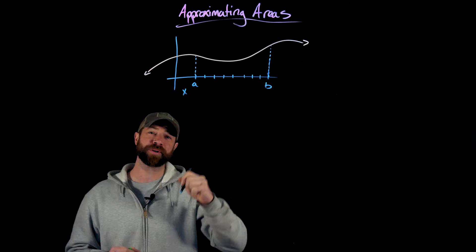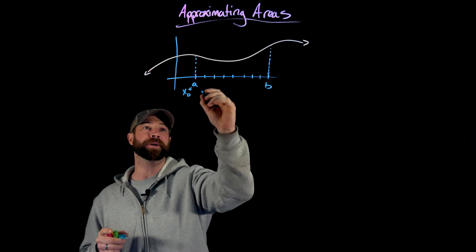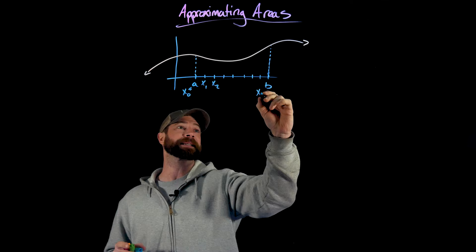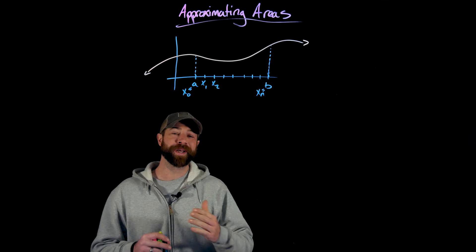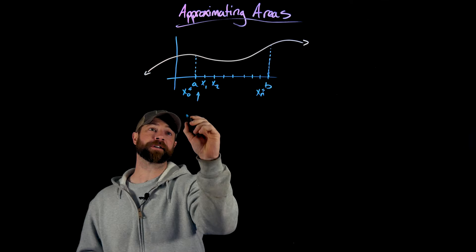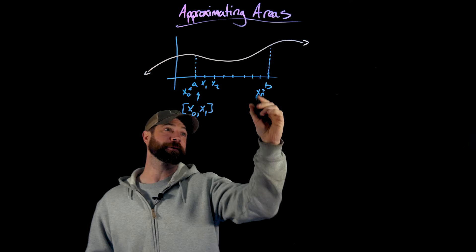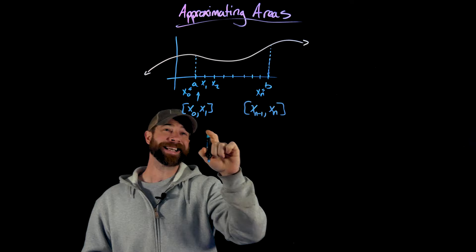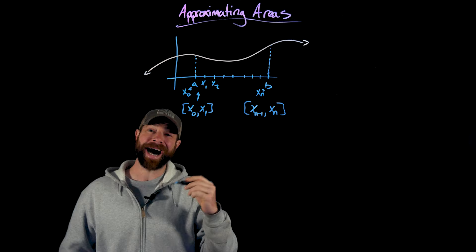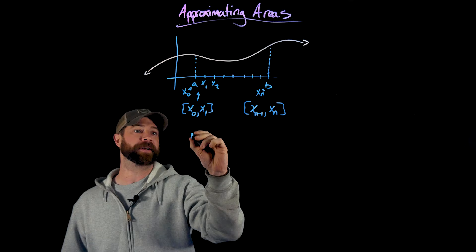We'll call A the first part, X sub zero. X sub one will be the next cut, X sub two, all the way to X sub N, which will be B, or the end of that interval. When we create a partition like this on interval AB, the first interval would be X sub zero to X sub one, and the last interval would be X sub N-minus-one to X sub N. The ith interval specifically would be X sub I-minus-one to X sub I.